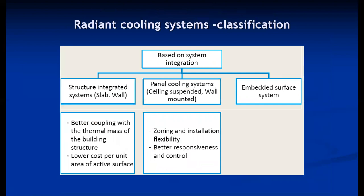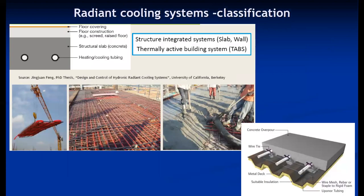There are different classifications based on the structure of radiant cooling systems: structure-integrated systems, which are fitted integral with the slab and wall; panel cooling systems; and embedded surface systems. Structure-integrated systems provide better coupling with the thermal mass of the building and are comparatively low cost per unit area. Panel systems offer proper zoning, installation flexibility, better responsiveness, and control.